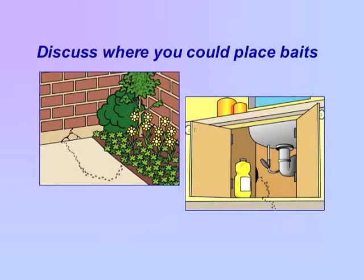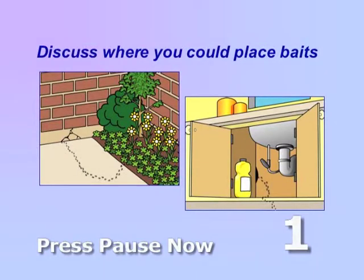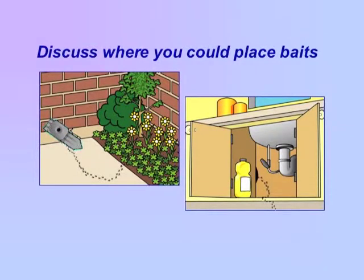Discuss where you can place baits. Outdoors, place baits along ant trails where ants are likely to find them, such as along edges of buildings or at nest openings. Indoors, remove the food source and ant trail before baiting. Place baits at ant entry points, in cabinets, or on counters.